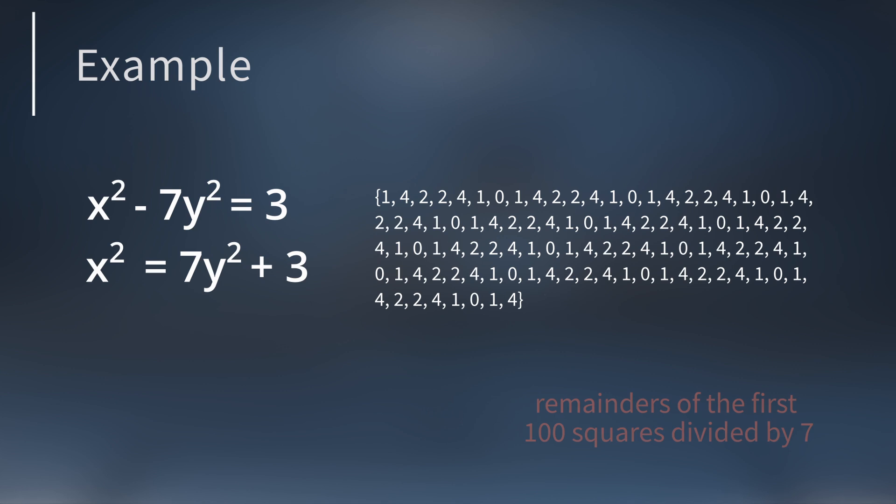But look at the remainders of the first 100 squares when you divide by 7. There is a clear pattern. If you divide the square of an integer by 7, then you get 0, 1, 2, or 4.